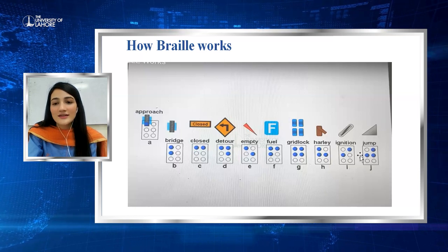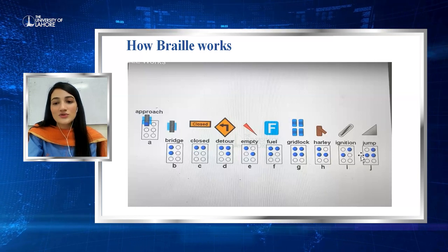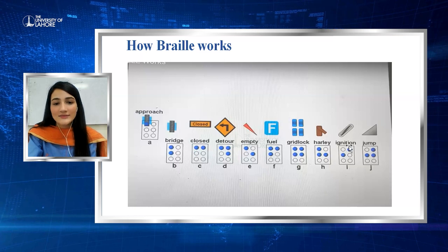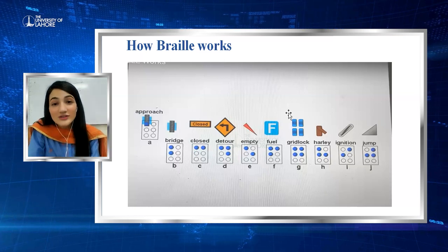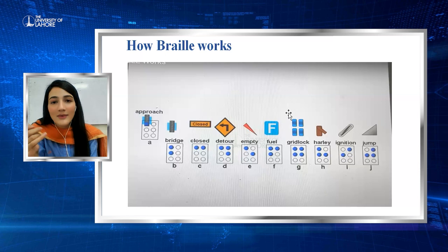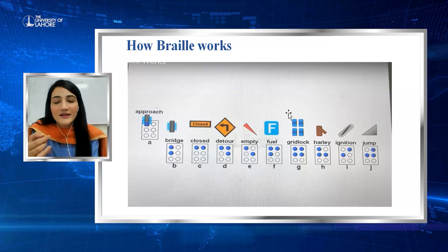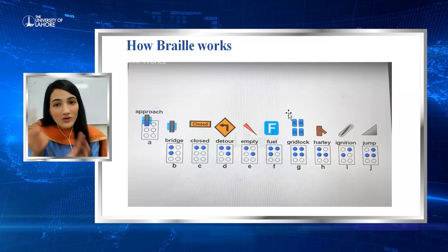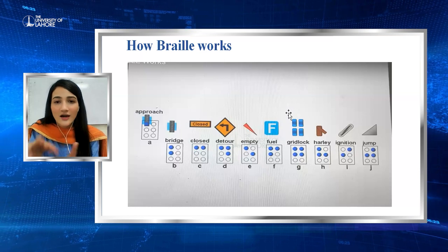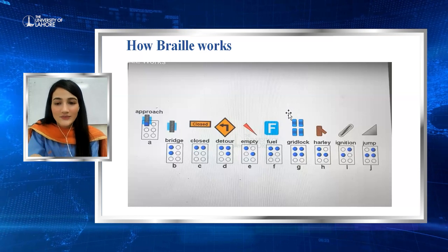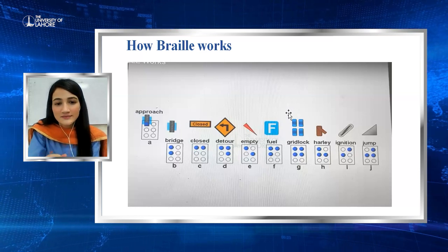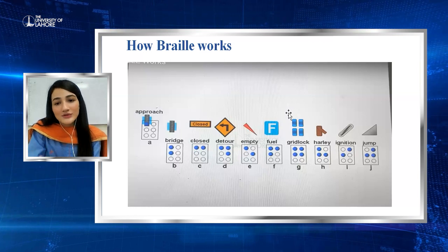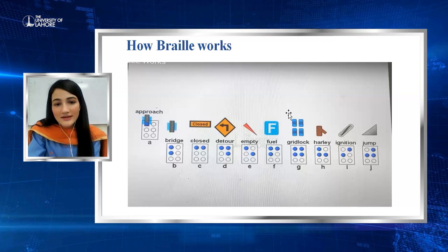For the letter corresponding to 'Harley', dots 2, 4, and 6 are raised. As mentioned, if you can remember the pattern from A to J, it is the base of all the alphabets in Braille, and it will help you learn the rest.